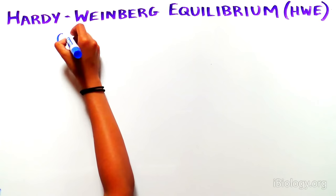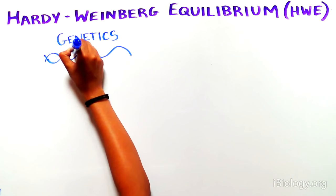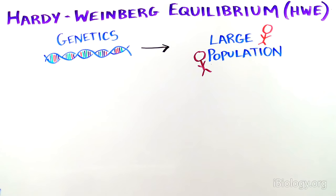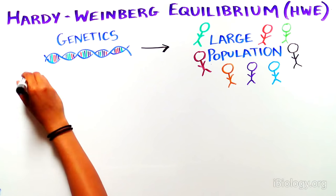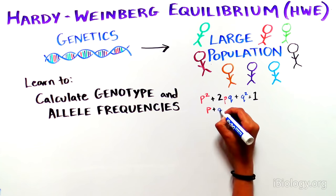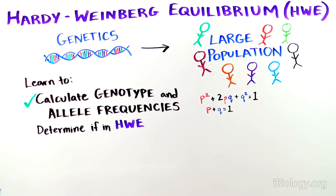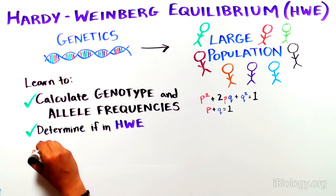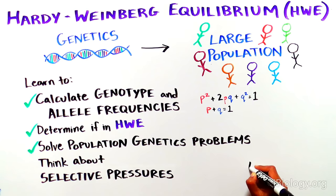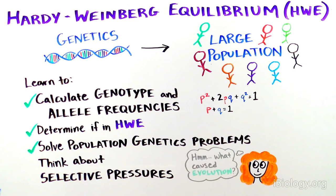Overall, Hardy-Weinberg equilibrium is a way to apply Mendelian genetics — the idea that traits like coat and eye color get inherited — to large populations and figure out whether a trait is undergoing evolution. Through this lesson, you have learned how to calculate genotype and allele frequencies over several generations and use these calculations to determine if a population is or is not in Hardy-Weinberg equilibrium. If it is in equilibrium, you can use Hardy-Weinberg equations to solve population genetic problems. If it is not, you can think about what selective pressures are causing evolution and how they may shape future generations.